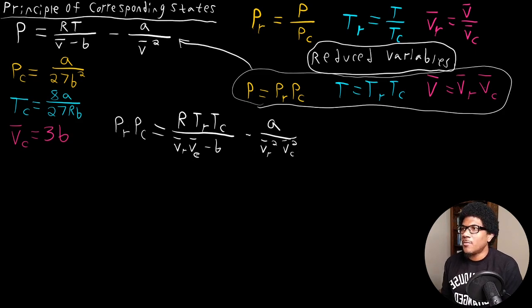So now what we've done is plug in these redefinitions of pressure, temperature, and volume in terms of the reduced and the critical values. So what I want to do is take the critical pressure, temperature, and volume that we derived in the previous video, plug those in here for PC, TC, and VC, and let's see what we get.